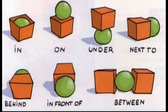In the first picture we can see the ball is inside the box, so we can say the ball is in the box. Then next, the ball is on the box. Then the ball is under the box. And next, the ball is next to the box, or the ball is behind the box. The ball is in front of the box, and we can say the ball is between the two boxes.